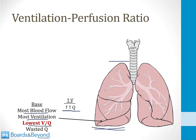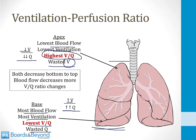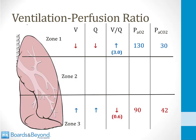At the top of the lung, we have the lowest blood flow and lowest ventilation, but the decrease in blood flow is much greater than the decrease in ventilation. Therefore, the apex has the highest VQ ratio — as high as 3.0 — meaning we're wasting ventilation. Great gas exchange occurs at the apex, but very little blood flows through there. Both ventilation and perfusion decrease from bottom to top, but blood flow decreases more, so VQ is lowest at the bottom and highest at the top.